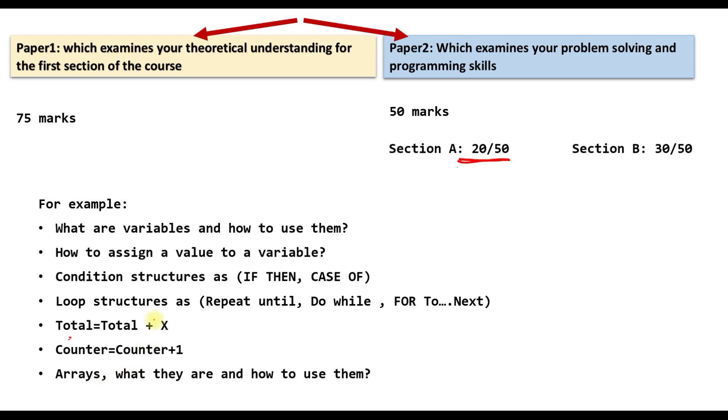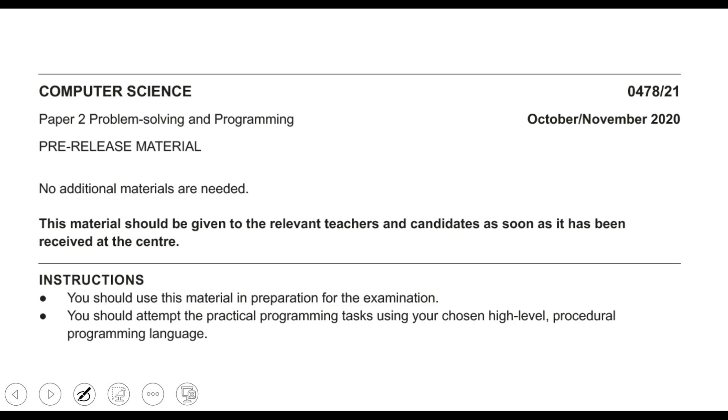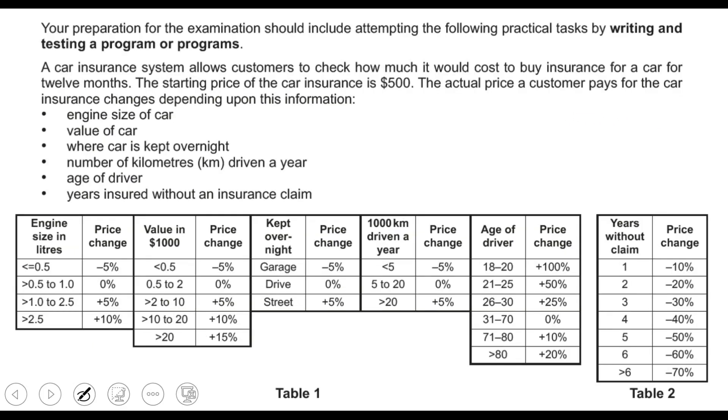You should also know how to create an array and how to use them. As you know, the name for Paper 2 is Problem Solving and Programming. Our paper today is 2.1 0478 October November 2020. Let's discuss the main task and the main problems that we need to solve. This section is talking about a car insurance system that allows customers to check how much it would cost to buy insurance for a car for 12 months, for a year. The starting price of the insurance is $500.